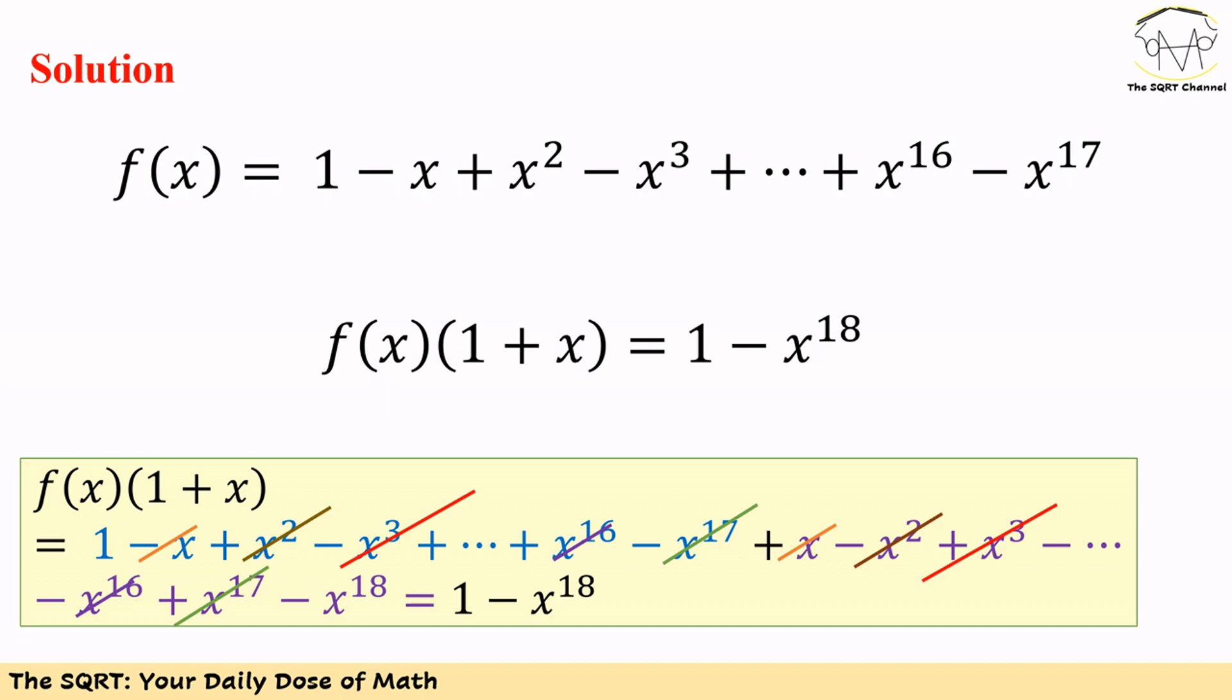If you multiply f of x by 1 plus x, then we are going to have the whole expression that we have for f of x first. Here you can see that in blue, and then you are going to multiply x by f of x, and then we will have the expression that we have here in purple. You can see that many of these terms can be removed.